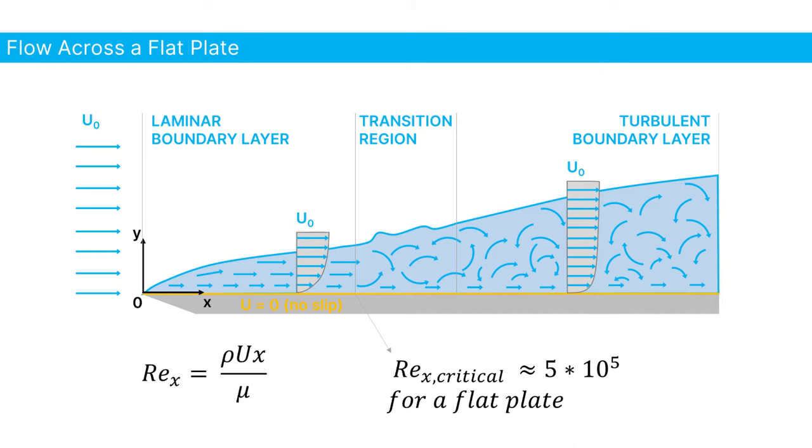If the undisturbed air itself is laminar and there is nothing to trip the flow, the boundary layer will start off as a laminar one.